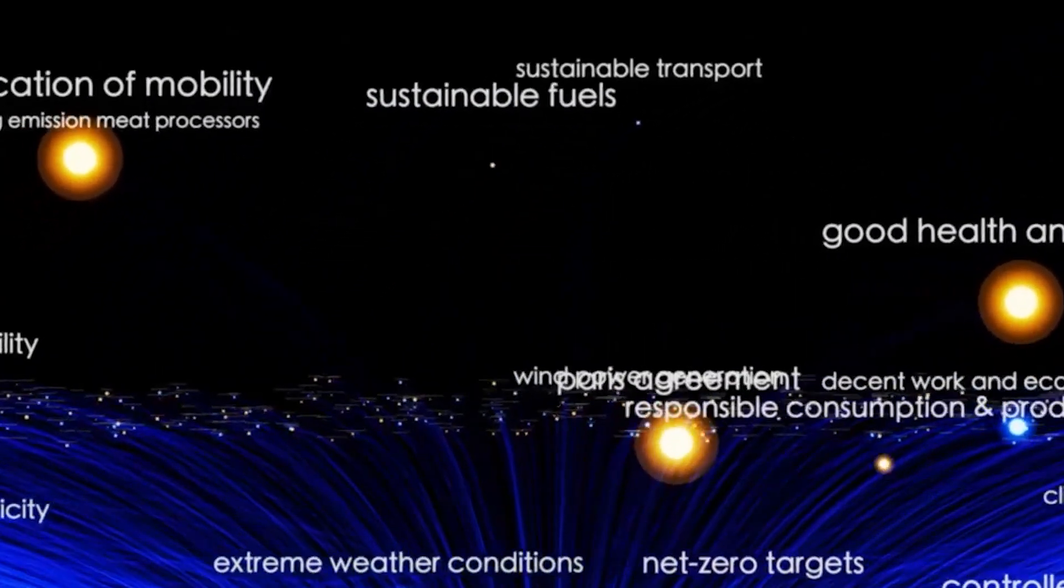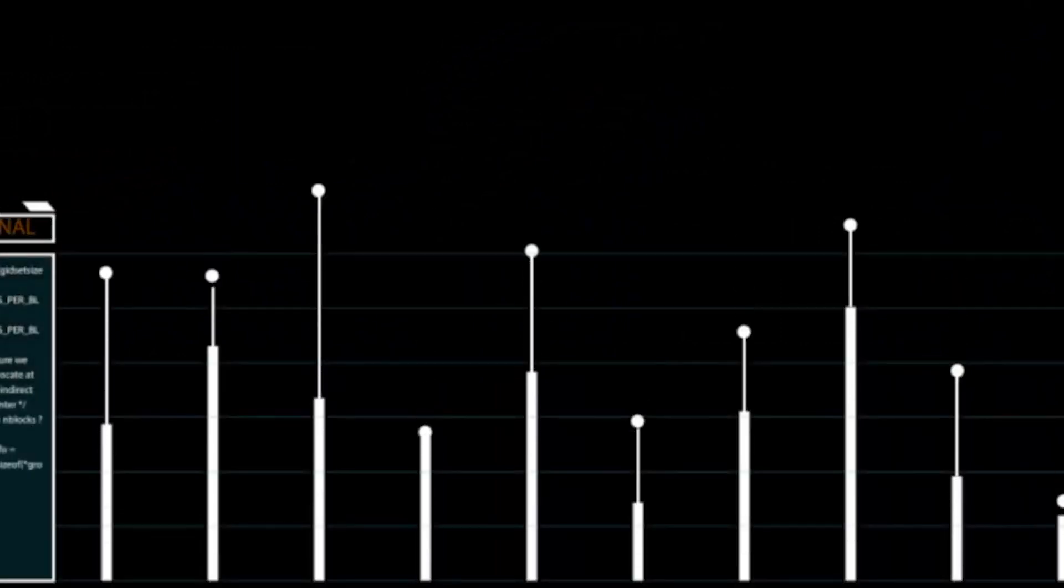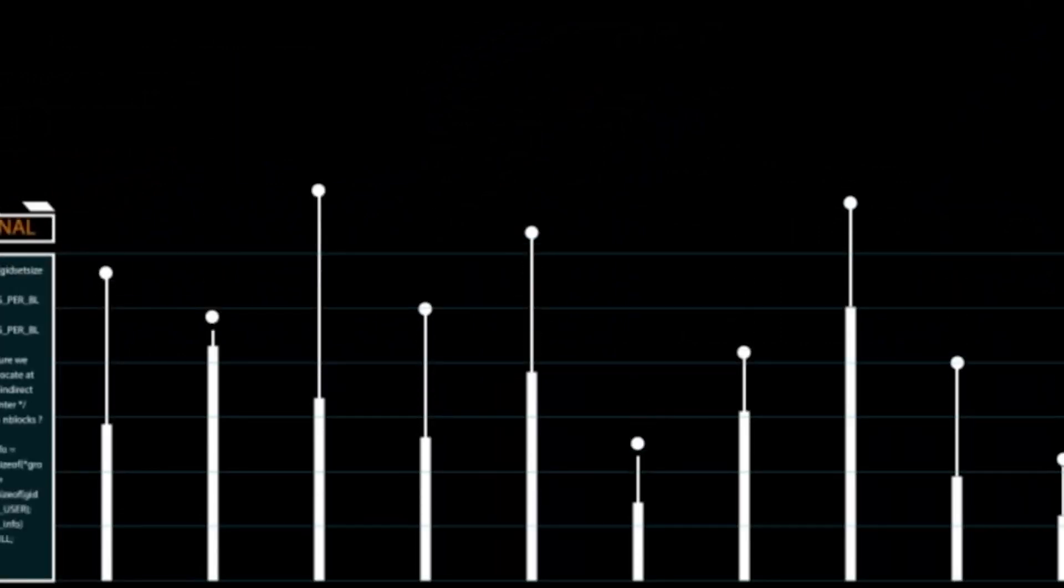These processes create a kind of stellar heartbeat, rhythmic fluctuations in brightness that can be measured from Earth.